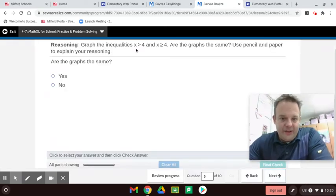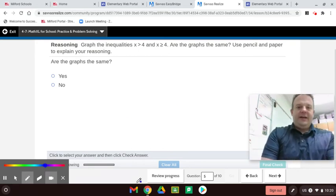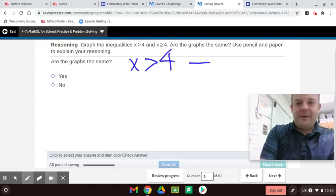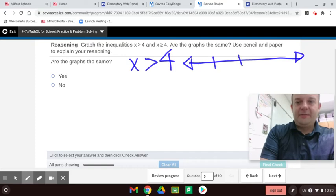So, graph the inequalities. X is greater than 4, and X is greater than or equal to 4. Are the graphs the same? So, let's graph them now. Here is X is greater than 4. This is what that graph looks like. You ready? You draw a line like this, and usually I just put three interval pieces with the 4 goes in the middle of it.